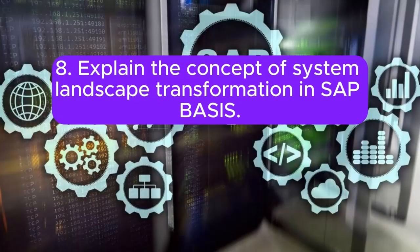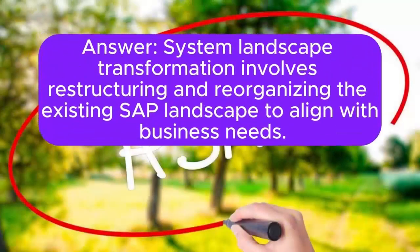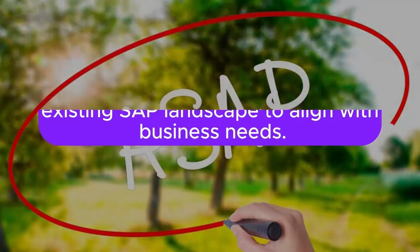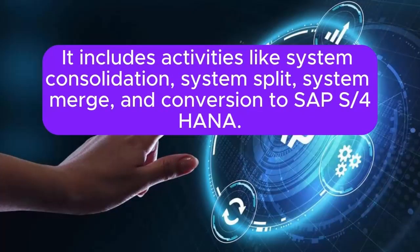Question 8: Explain the concept of system landscape transformation in SAP BASIS. System landscape transformation involves restructuring and reorganizing the existing SAP landscape to align with business needs. It includes activities like system consolidation, system split, system merge, and conversion to SAP S/4HANA.